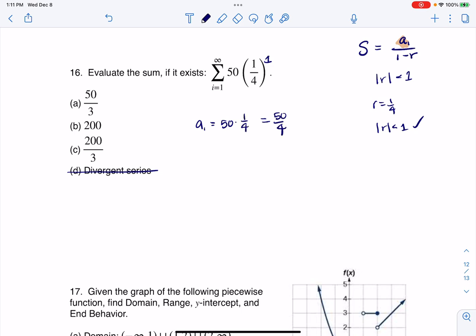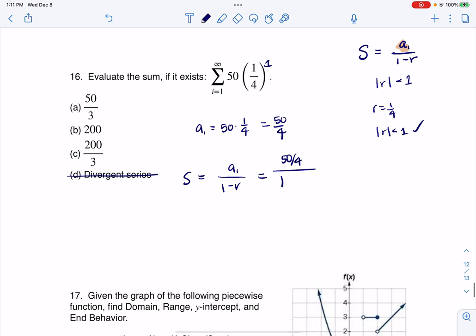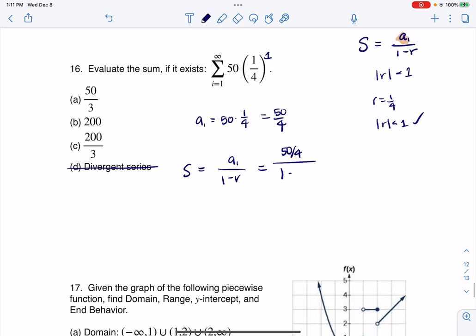Okay, so we'll keep that in mind, and then let's just apply the formula. a over 1 minus r, so this is 50 over 4, divided by, let me scroll that back up a little bit, by 1 minus 1 fourth.